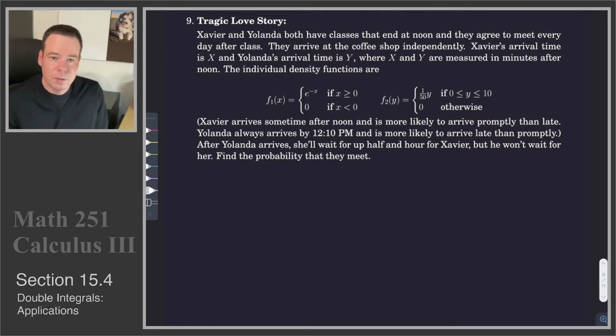After Yolanda arrives, she will wait for up to half an hour for Xavier. This is some extra information. Yolanda, after she arrives, she'll wait up to a half an hour for Xavier. But Xavier will not wait for her. So once he arrives, if she's not there, he's gone. So under these conditions, what is the probability that they will meet?